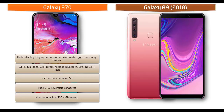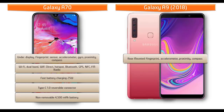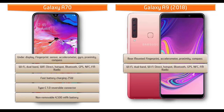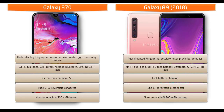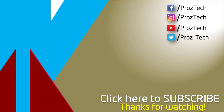Whereas in the Galaxy A9, you can find a faster fingerprint scanner placed on the rear side of the phone. It also comes with sensors like accelerometer, proximity, compass, and gyro. This phone comes with Wi-Fi, dual band, Wi-Fi Direct, hotspot, Bluetooth, GPS, NFC, FM radio, and a Type-C reversible connector with fast battery charging. This phone is powered by a 3800 mAh non-removable battery.